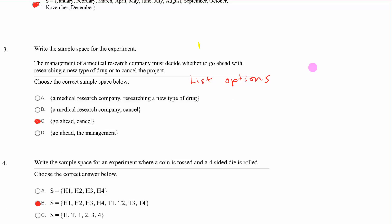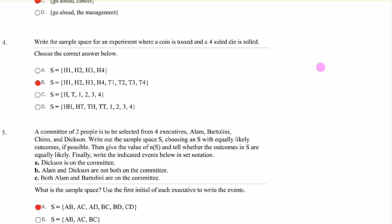Write the sample space for this experiment. The management of a medical research company must decide whether to go ahead with researching a new type of drug or to cancel the project. Well what are your options? Your options are either go ahead or cancel. Those are the only two options mentioned, so that's your sample space. Number 4: the sample space for an experiment where a coin is tossed and a four-sided die is rolled. We've got a coin and a four-sided die. We're gonna have heads 1, heads 2, heads 3, heads 4, tails 1, 2, 3, 4. Those are our options when we do that activity.